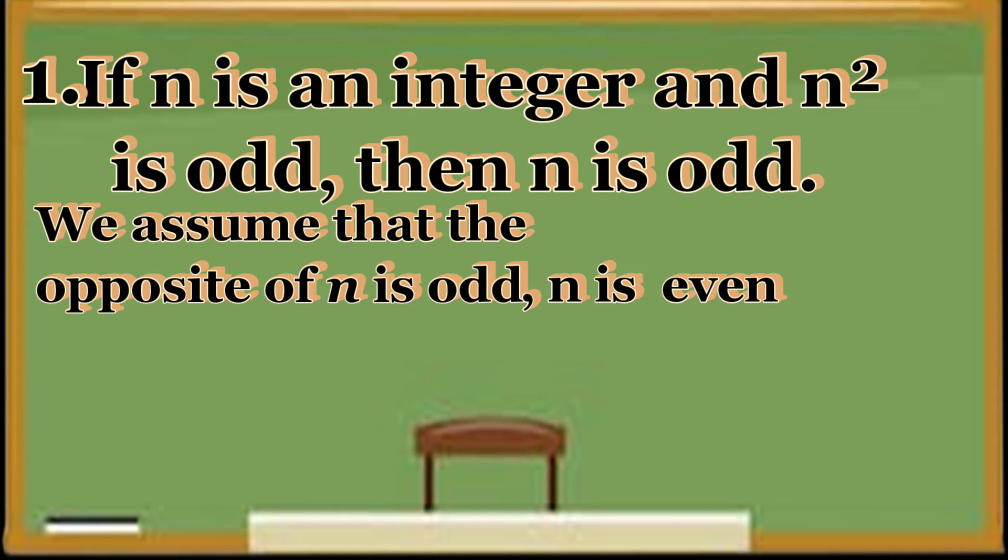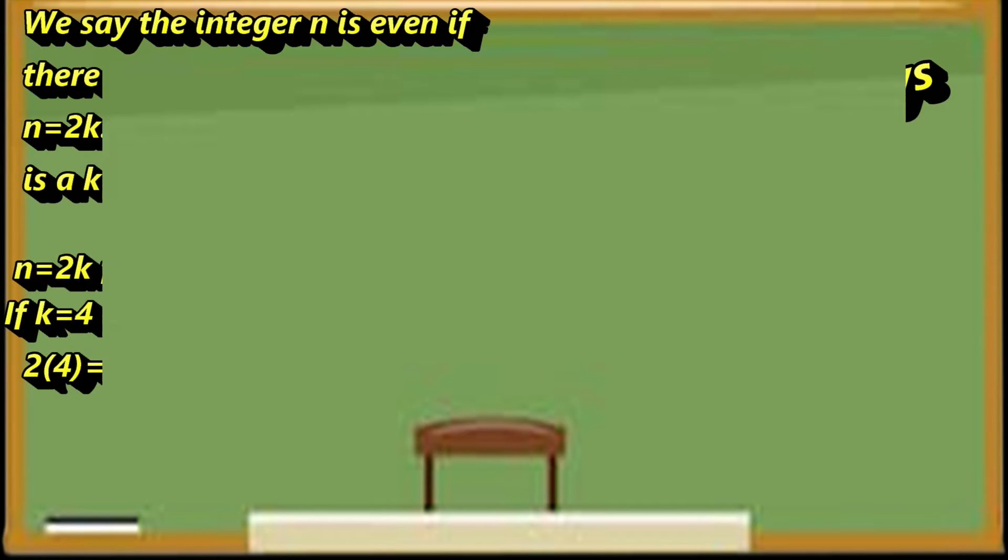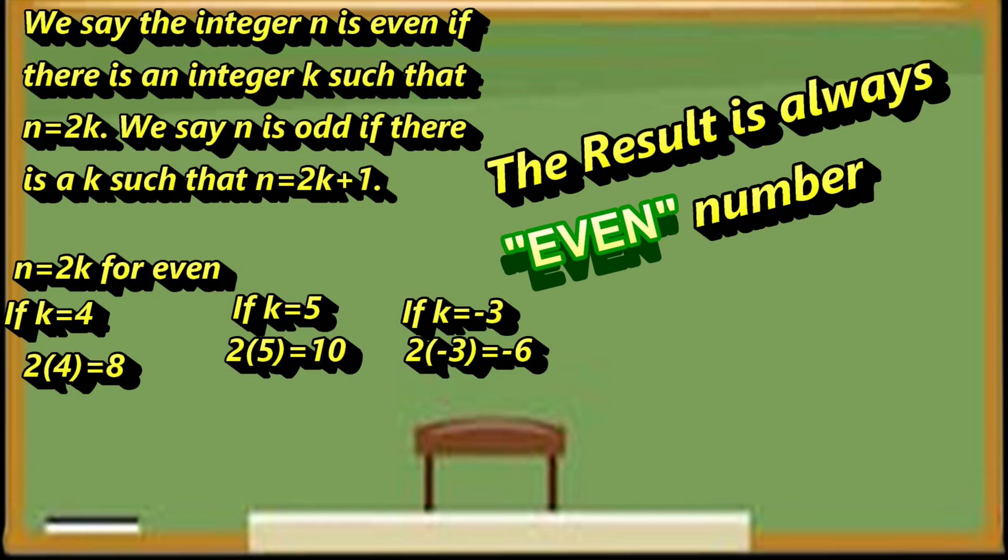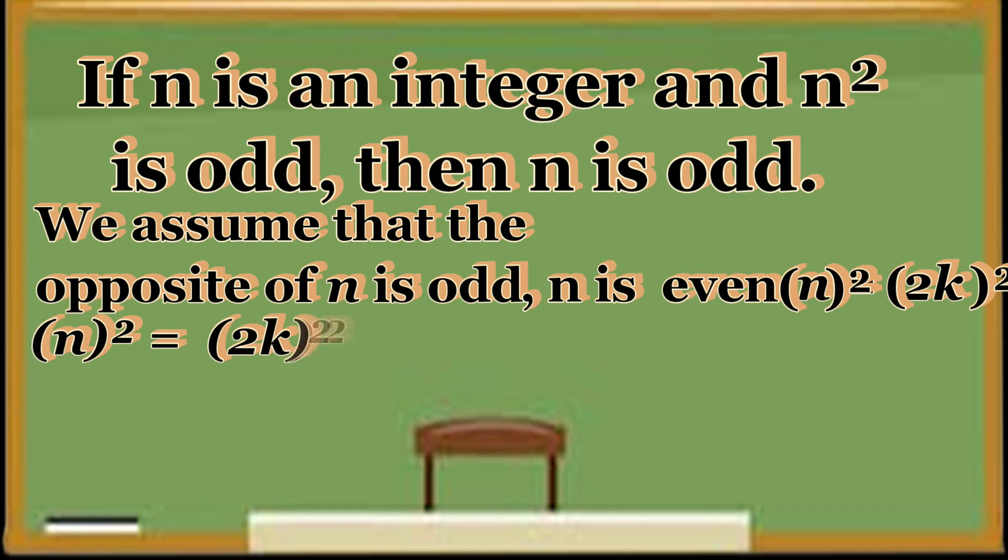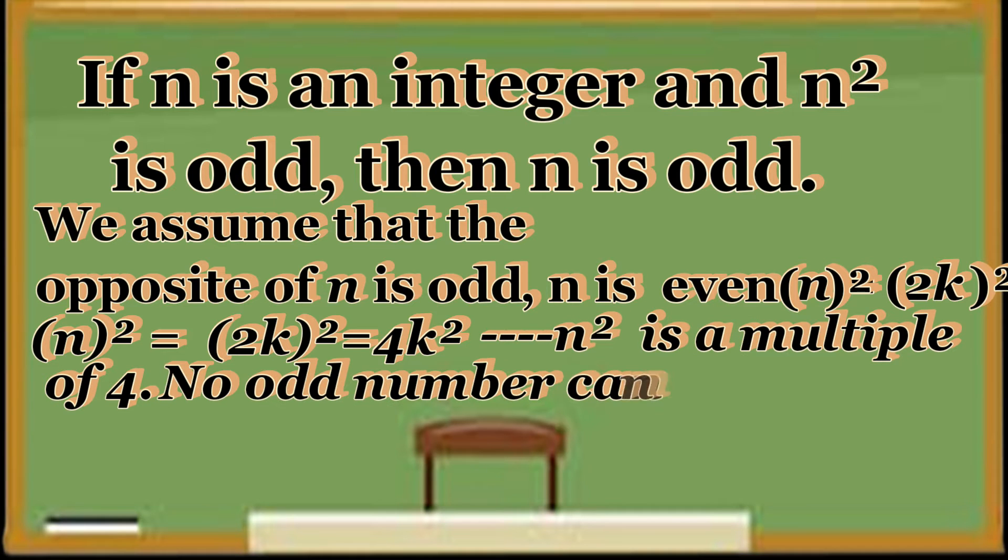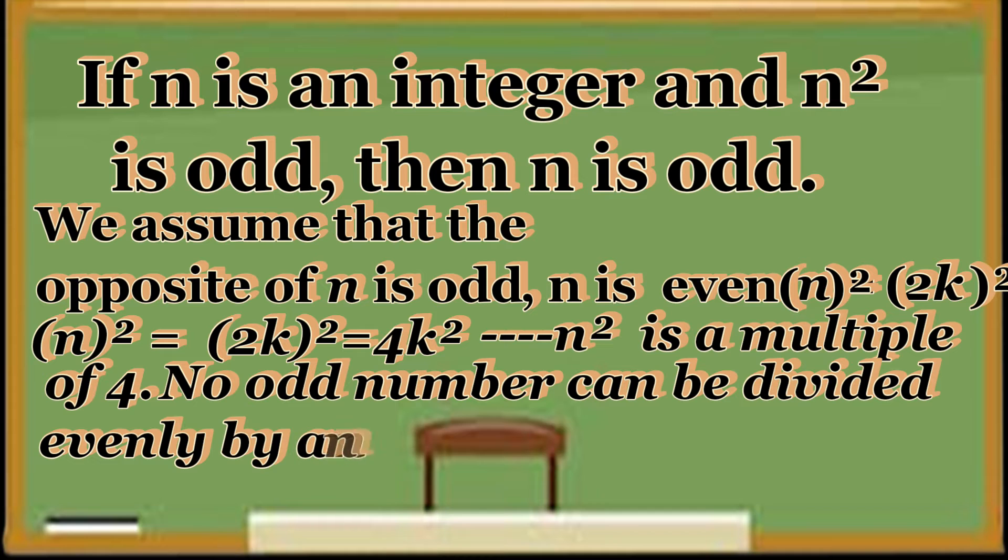If N is even, then N equals 2K where K is an integer, just like our example a while ago. Now, square N and see what happens. This becomes N squared equals 2K raised to 2, that is equal to 4K squared. This means that N squared is a multiple of 4. No odd number can be divided evenly by an even number.